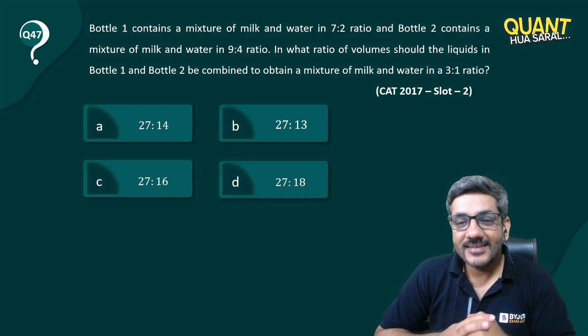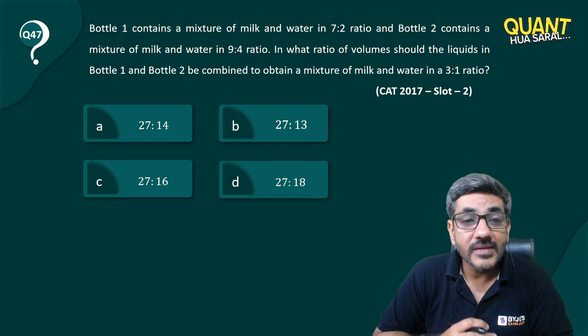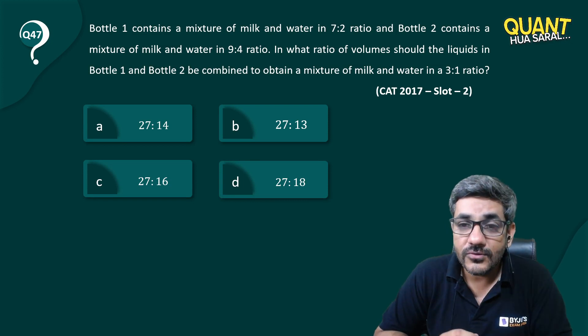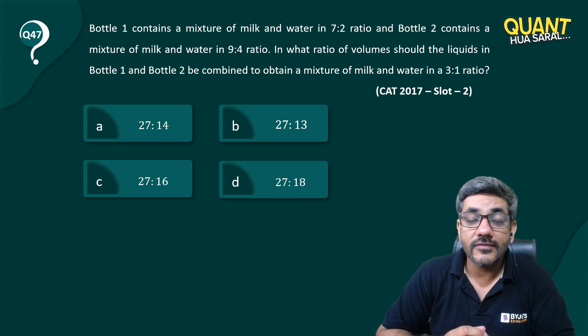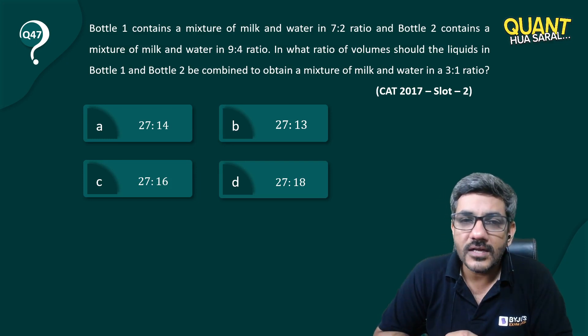Hello everyone, welcome back. Question number 47 of the series: Bottle 1 contains a mixture of milk and water in a ratio of 7:2. Bottle 2 contains milk and water in a ratio of 9:4. In what ratio should they be mixed to obtain a mixture of milk and water in a ratio of 3:1?